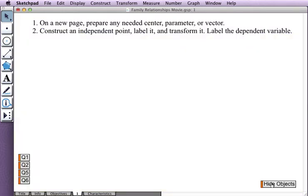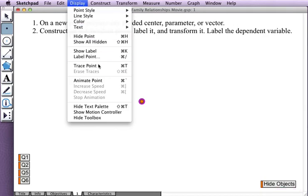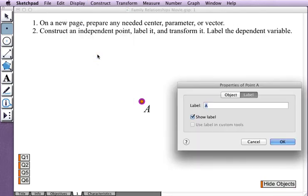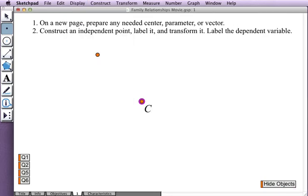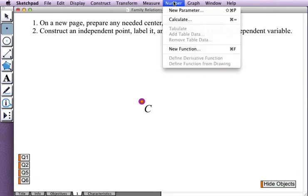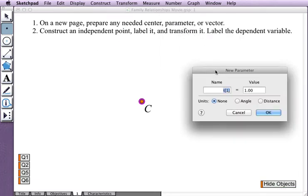In this movie, I'll use the rotation family as the example, beginning with a new sketch. I construct a center point and label it C, and create a new parameter for the angle of rotation, which I name theta, and give an angle of 135 degrees.